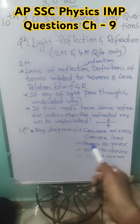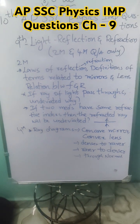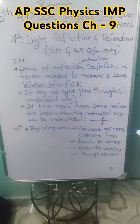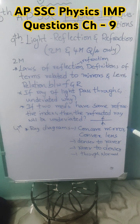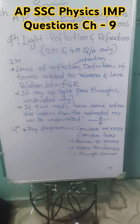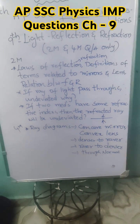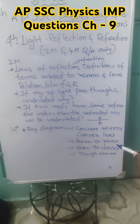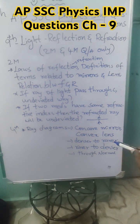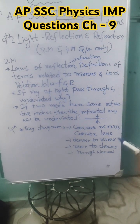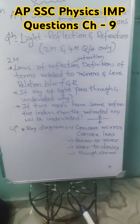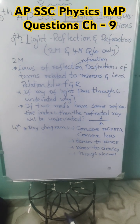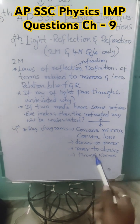For the four marks from this chapter, definite questions are ray diagrams for the concave mirror — all six positions — and convex lens — all six positions. In refraction, when the ray of light is passing from denser to rarer, rarer to denser, and through the normal — these are the most important questions.